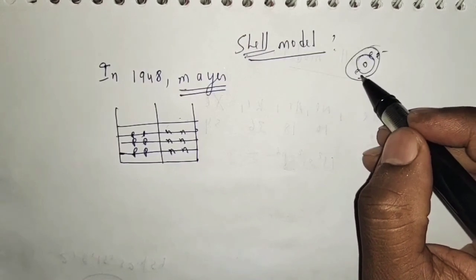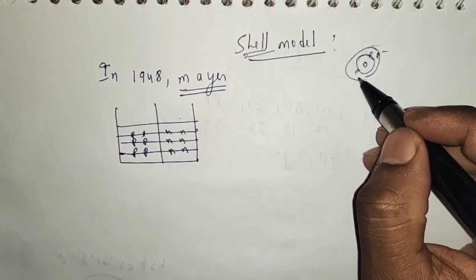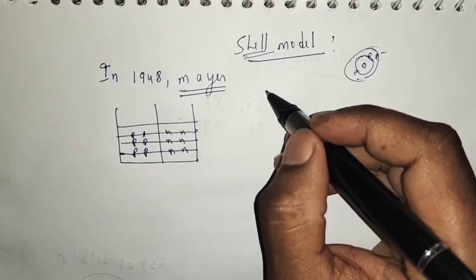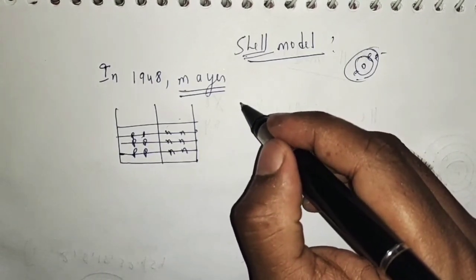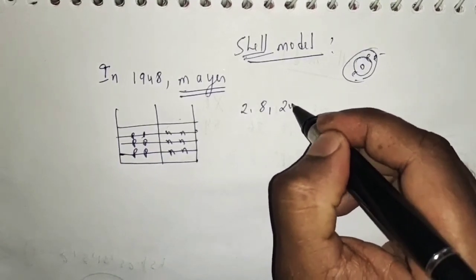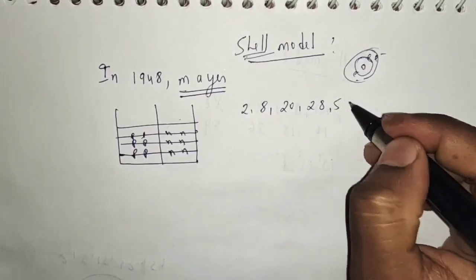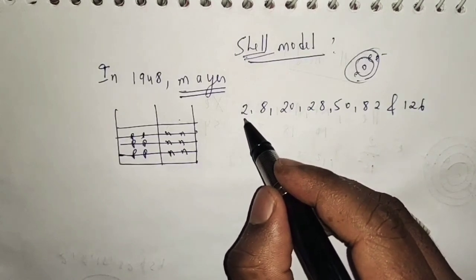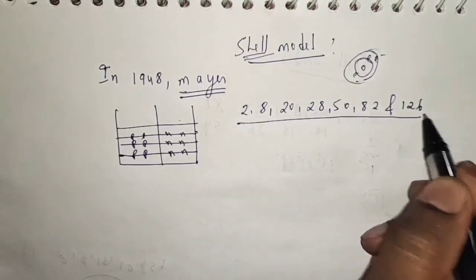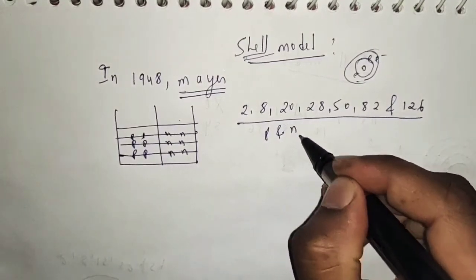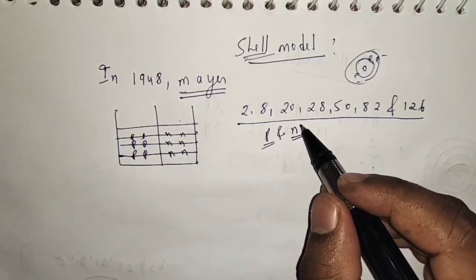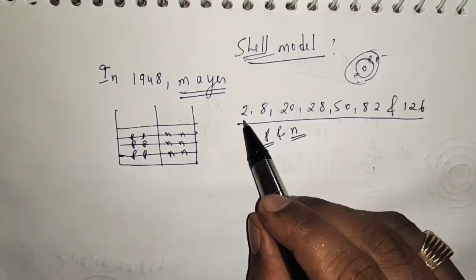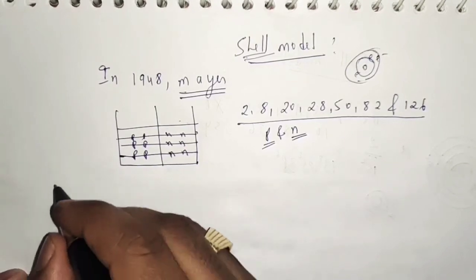We have seen that atoms with electron numbers 2, 8, 18, 32, and 54 are more stable. In the same way, when the proton or neutron number inside a nucleus equals 2, 8, 20, 28, 50, 82, or 126, the nucleus is more stable compared to other nuclei that have proton or neutron numbers different from these values.